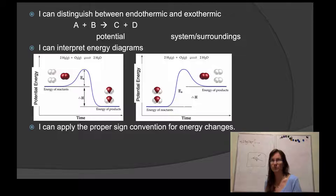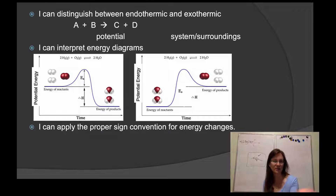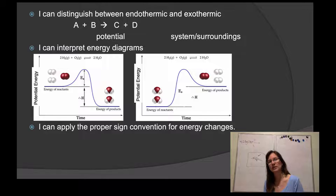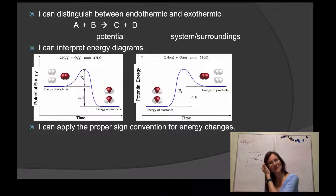So the ways to think about endo and exo are: placement on the reaction, temperature change, and sign — which is the third learning target: I can apply the proper sign convention. Exothermic is always negative; endothermic is always positive.